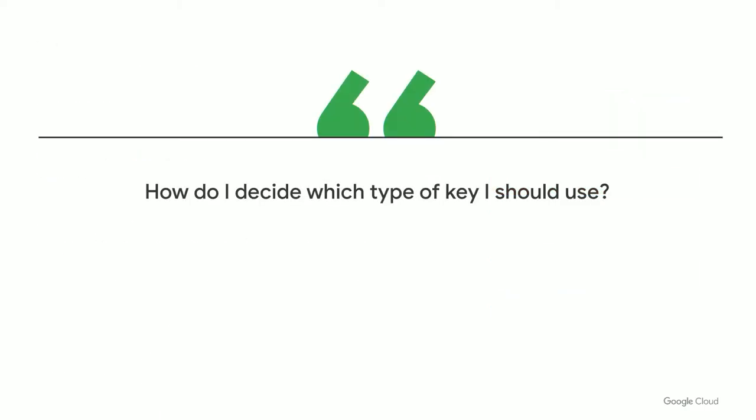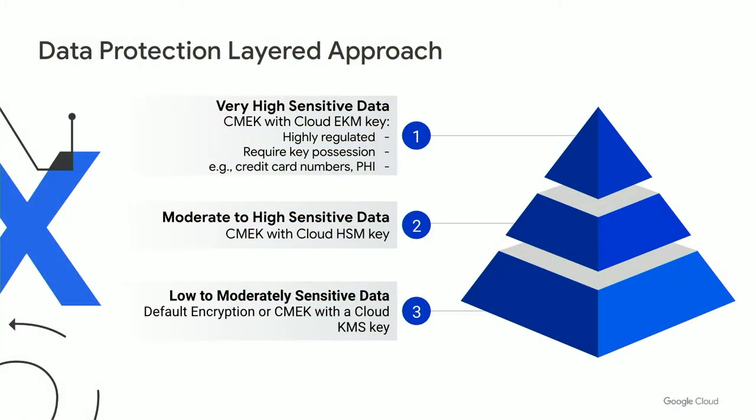The last question is: how do I decide what type of key I should use? In GCP we've provided a wealth of different key management solutions, but having many choices can be confusing. To help, I'll explain a layered approach for managing your data. First, understand the sensitivity of your data. If it's not very sensitive or only moderately sensitive, you can use the default encryption we provide — Google Cloud encrypts every piece of data at rest by default. Or if you need to control the keys, use customer-managed encryption keys with Cloud KMS software keys.